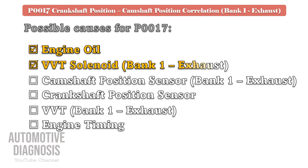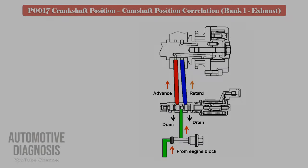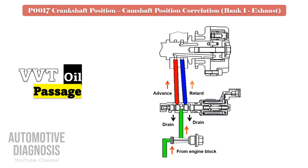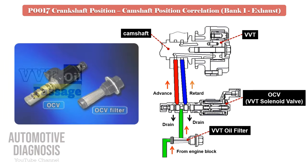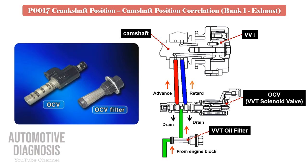Testing procedure for the bank one exhaust VVT solenoid valve. The VVT solenoid provides engine oil to the VVT in order to advance or retard the timing. Some engines have a separate VVT oil filter, but on many others the filter is installed on the solenoid. Locate the external filter, remove and clean it thoroughly.